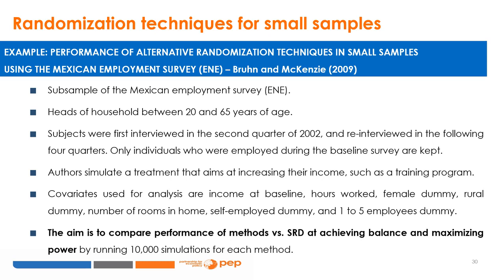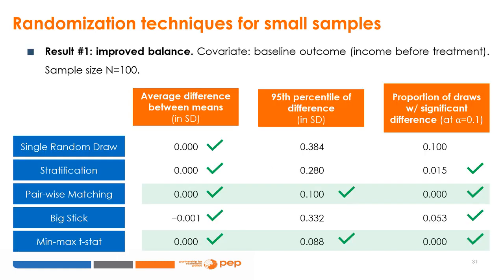The first result relates to improvement in balance on selected covariates. The covariate being balanced is income before treatment. Looking at the average difference between treatment and control means — which we want as close to zero as possible — all methods perform well and similarly. However, looking at the 95th percentile of the difference in means, which reflects the 5% most strongly imbalanced draws, pairwise matching and min-max t-stat show lower differences than the single random draw and other methods, offering better protection against imbalance in the extremes.